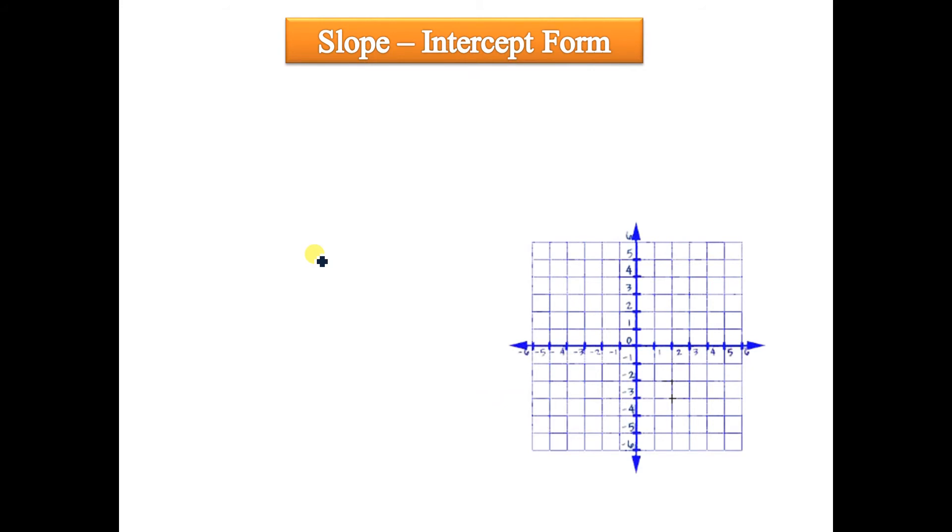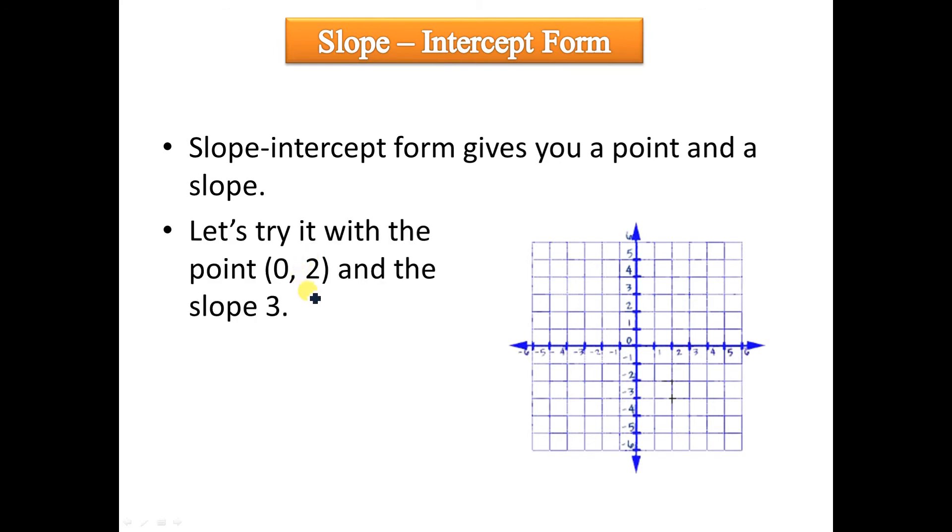Last way, slope-intercept form. Now what slope-intercept form does is it gives you a point and a slope. So all you've got to do is you start with the point, and you then count the slope. So the point we've given here is 0, 2, right there. Now, a slope of 3, that's really 3 over 1, and so slope is rise over run. This is a positive slope, so it should be going up from left to right. So let's go ahead and count from 2 up 1, 2, 3, and then over 1. Connect the dots. We're done.